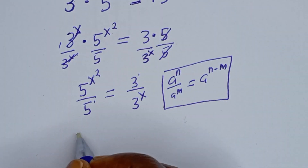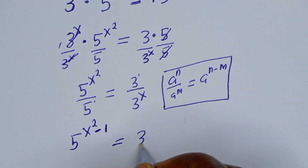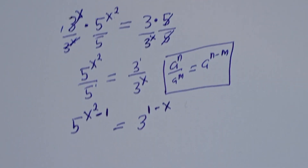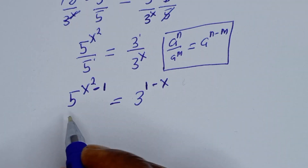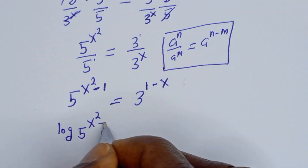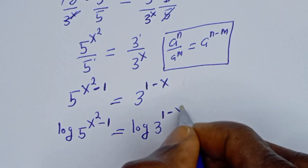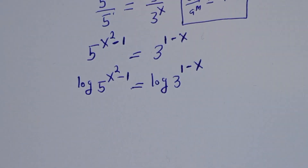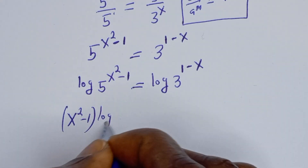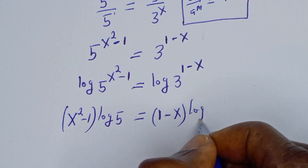This can be written as 5 to the power of s squared minus 1 is equal to 3 to the power of 1 minus s. Now let's take the log of both sides: log of 5 to the power of s squared minus 1 is equal to log of 3 to the power of 1 minus s. Then s squared minus 1 times log 5 is equal to 1 minus s times log 3.